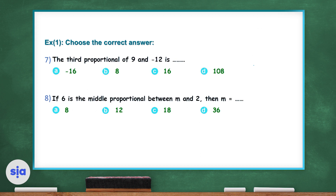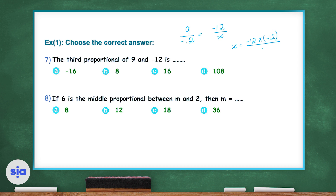Question 7. The third proportional of 9 and negative 12 is what? Since the question asks for the third proportional, we write 9 over negative 12 is equal to negative 12 over x, where x is the third proportion. So x equals negative 12 times negative 12 over 9. The answer is 16. The right answer in question 7 is choice C.